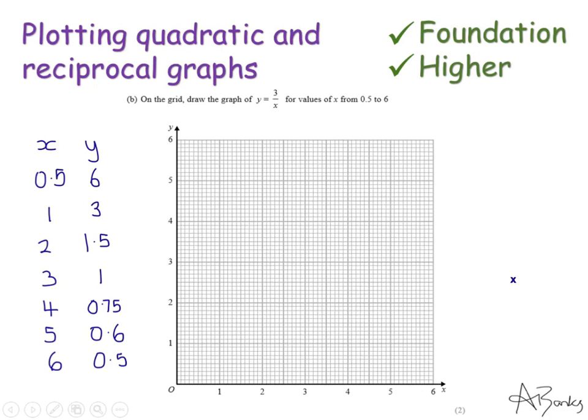As before part b is now to draw this graph and I'm going to use the table of values I just found in part a. These give me my coordinate pairs. So when x is a half y is 6. So that's there.